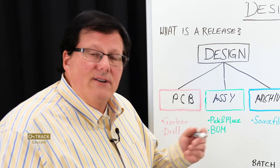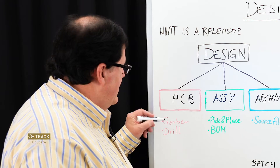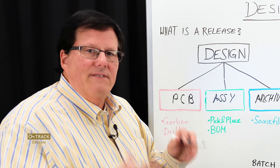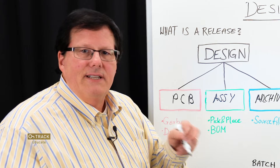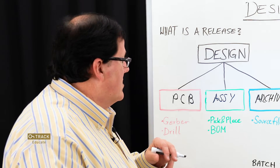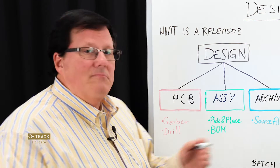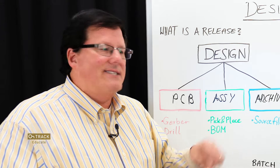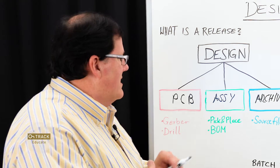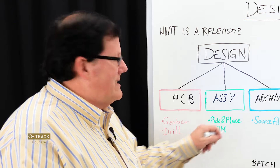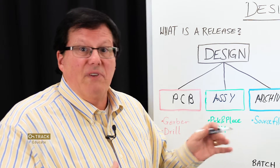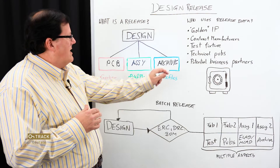A closely associated file for board fabrication is the drill file, which conveys the position and diameters of holes and any slots on the board. In assembly, we have pick and place files that designate what component goes to what location on the board, and closely related to that is the bill of materials.